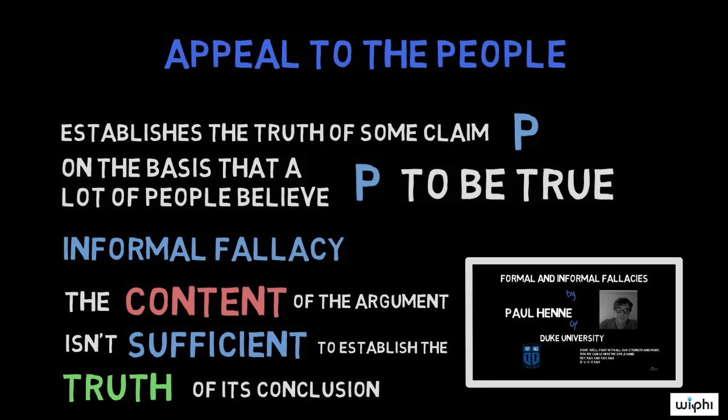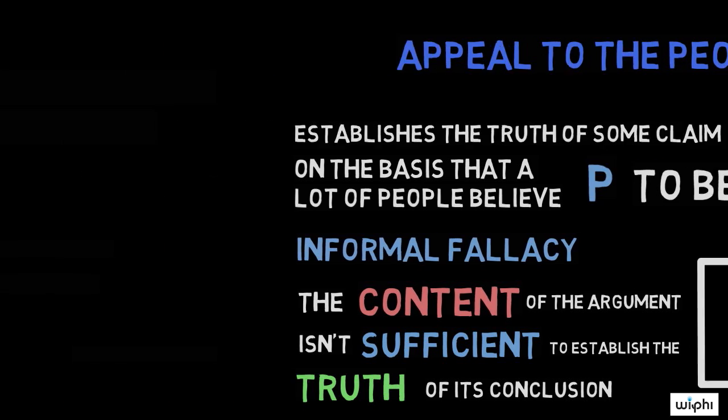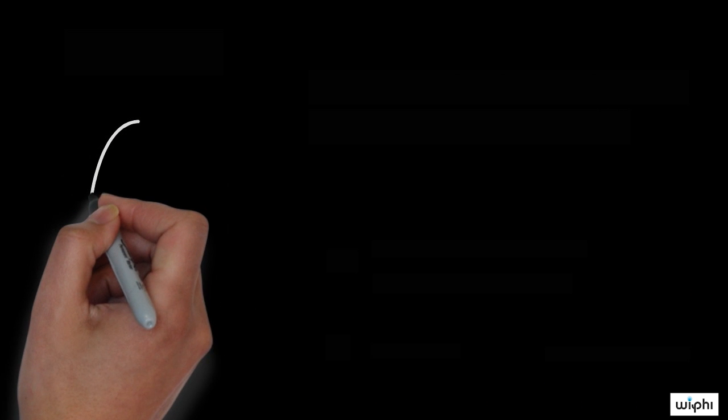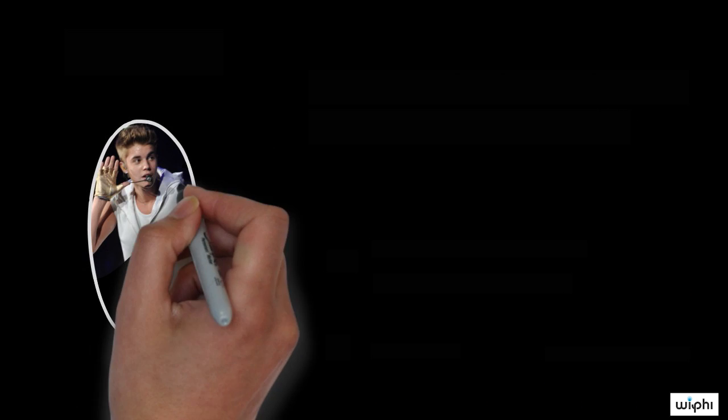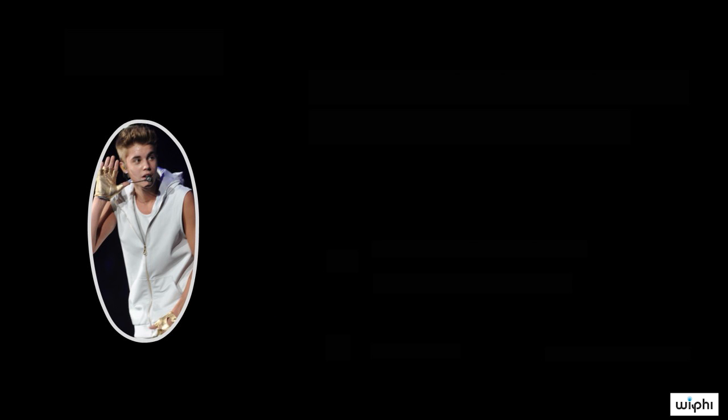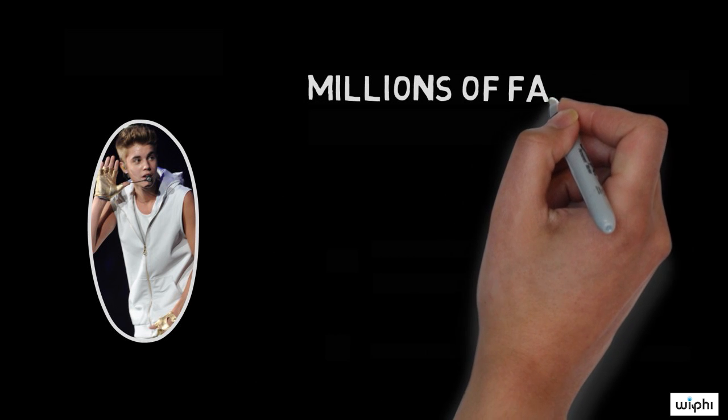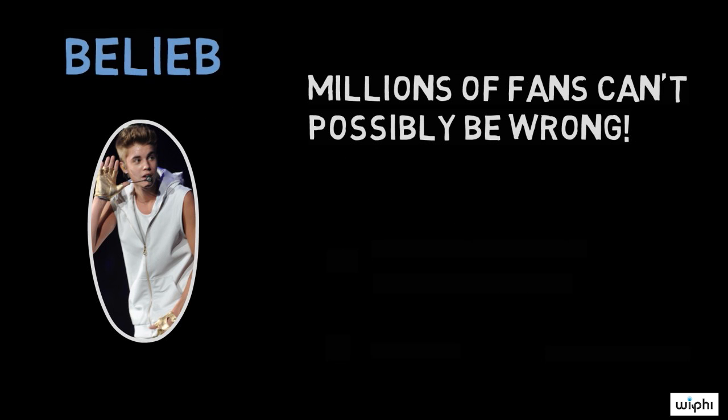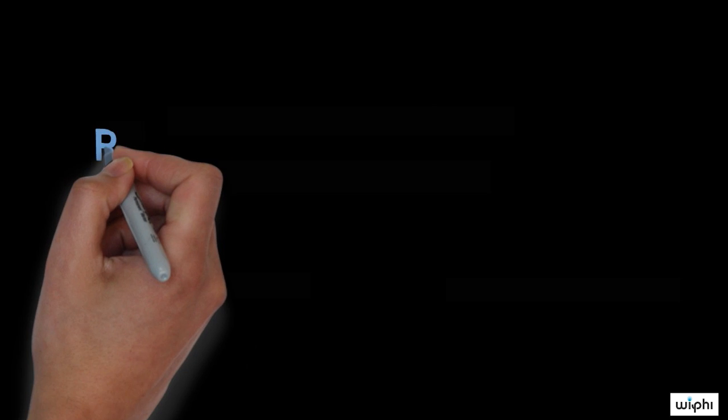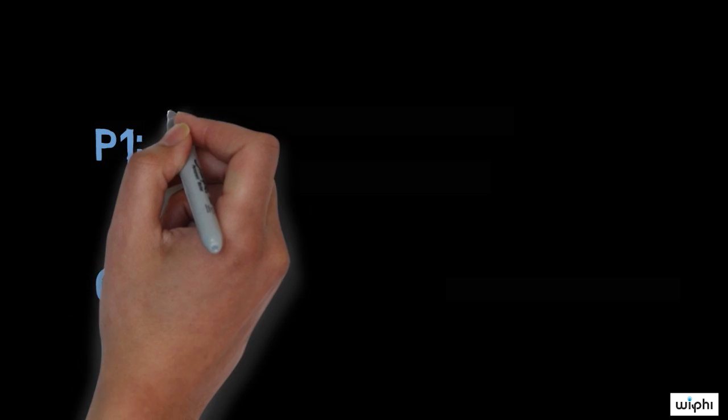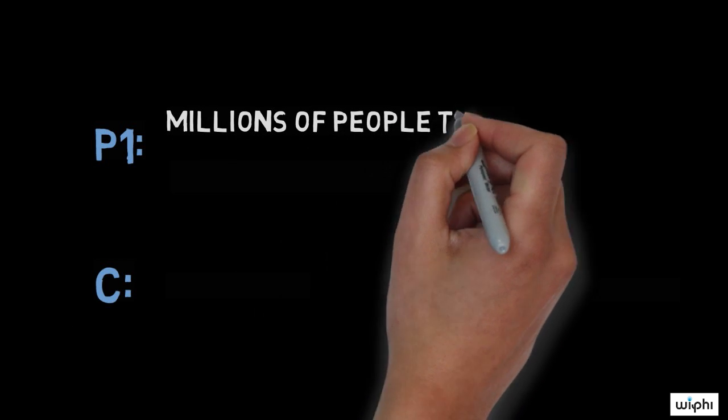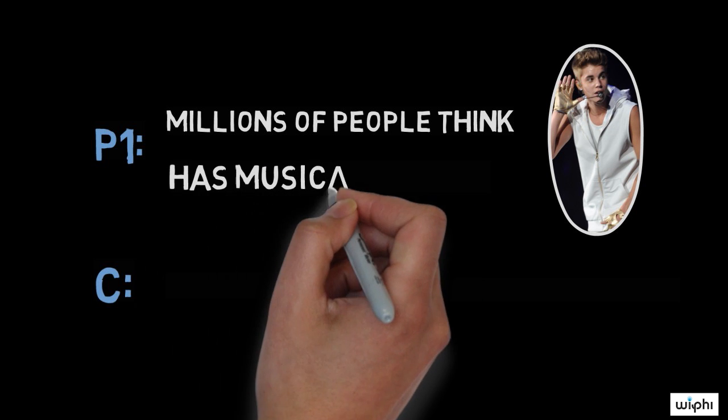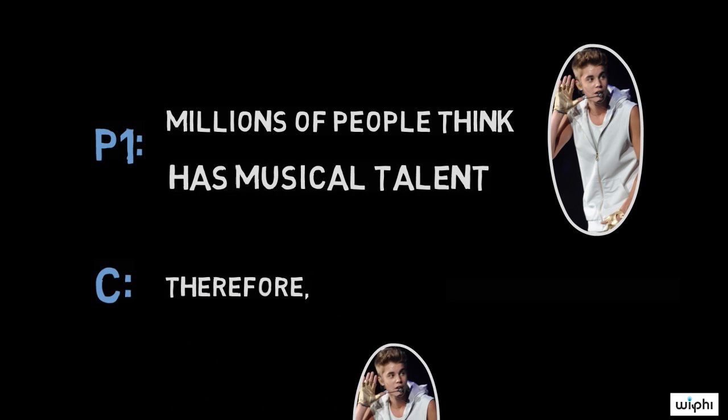An example will help clarify things. Suppose you and your friend are arguing over whether or not Justin Bieber has any musical talent. Your friend says, of course he has musical talent. Millions upon millions of fans can't possibly be wrong. If you wanted to formalize your friend's argument, it would look something like this. Premise 1: Millions of people think Justin Bieber has musical talent. Conclusion: Therefore, Justin Bieber has musical talent.